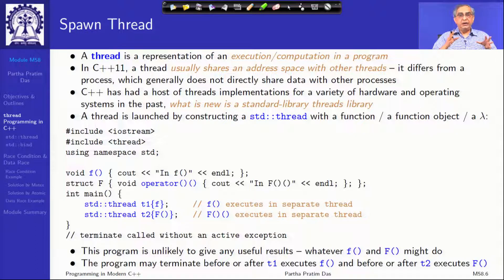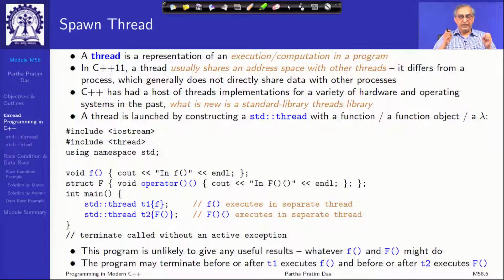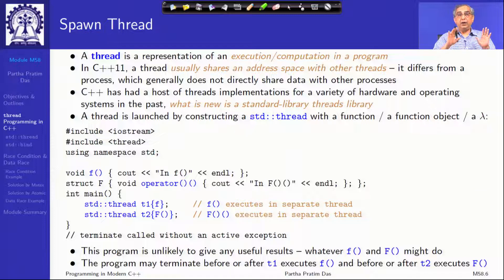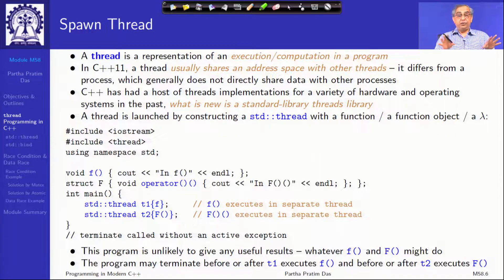You know about processes in systems — when we start a program it starts as a process, and multiple processes run simultaneously. Processes can share and exchange data through inter-process communication. Processes can be concurrent or parallel. A thread is a lightweight process; multiple threads run within one process. The advantage threads have is that they can communicate through shared variables and shared data, since they are within one process space.